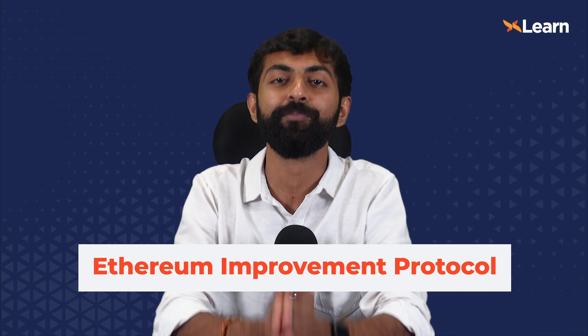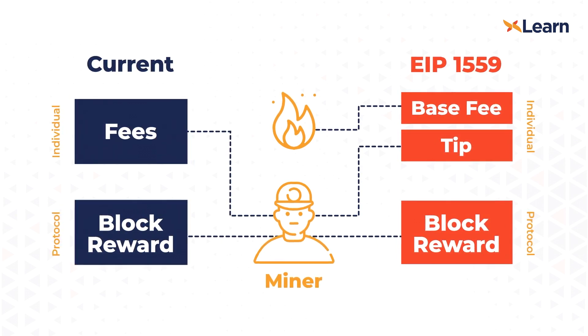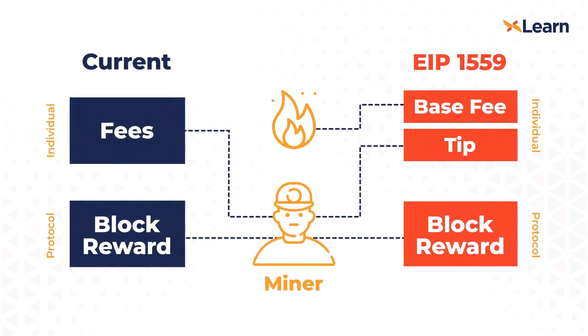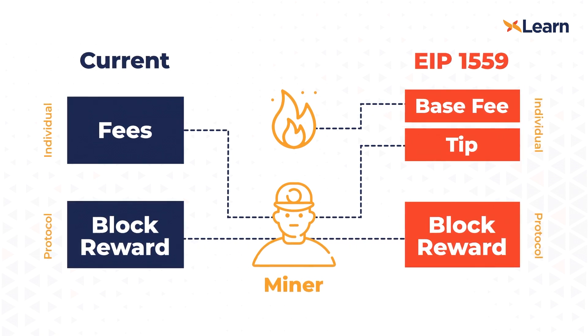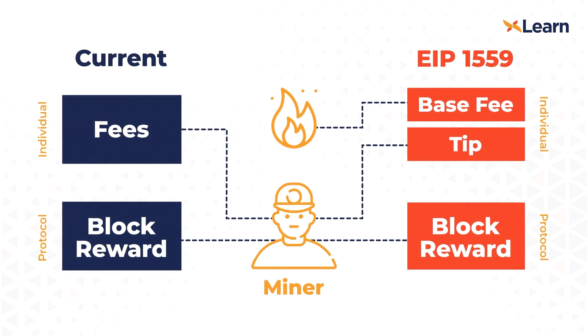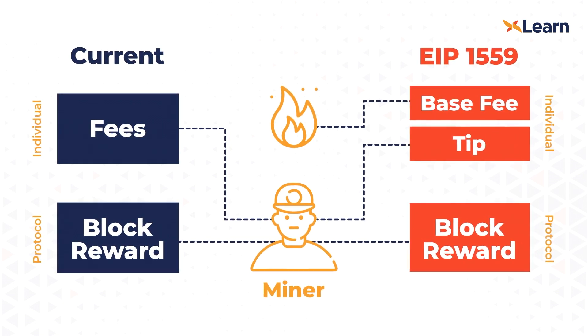Let's talk about EIP-1559. EIP stands for Ethereum Improvement Protocol, and this protocol suggests making revolutionary changes in the way we pay fees. In the current scenario, fees are paid to miners who also receive the block reward of 2 ETH per block. But in EIP-1559, the base fee is burnt, while a tip and the block reward still go to the miner. So basically the fee is divided into two parts — a base fee and a miner tip. The base fee gets burnt and the tip goes to the miner.